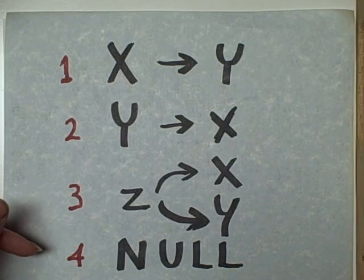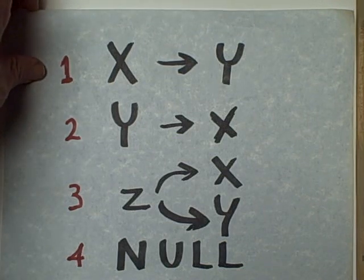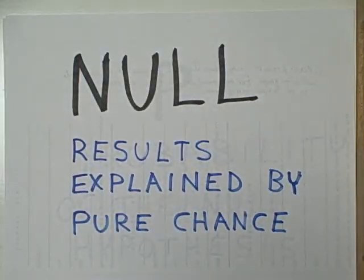But there is a fourth possibility, one that we're actually going to start with. That fourth possibility is called the null hypothesis. Before we can accept any other causal explanation of the relationship between two variables, we must reject the null hypothesis. What the null hypothesis means is that the results we have obtained could be explained by random variation, pure chance, luck. And in order for us to infer cause and effect, we have to examine and carefully consider this possibility.